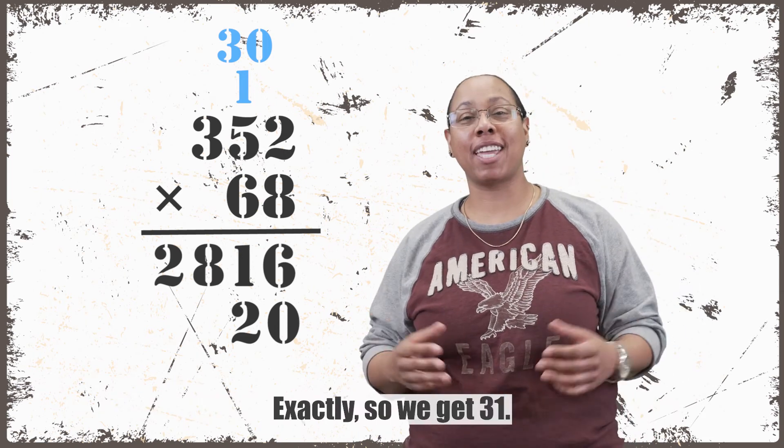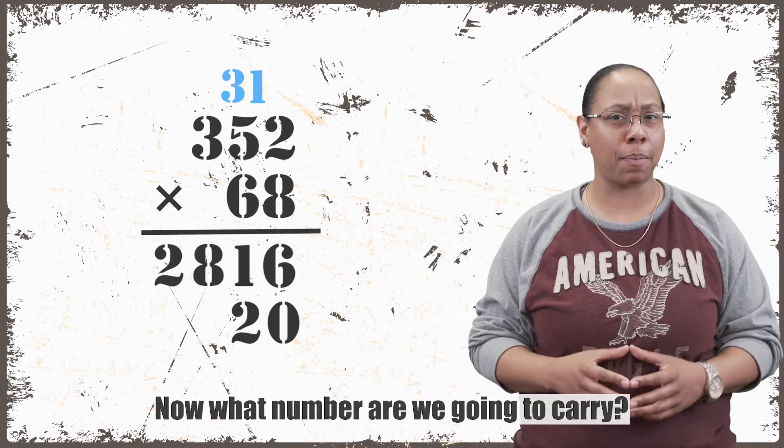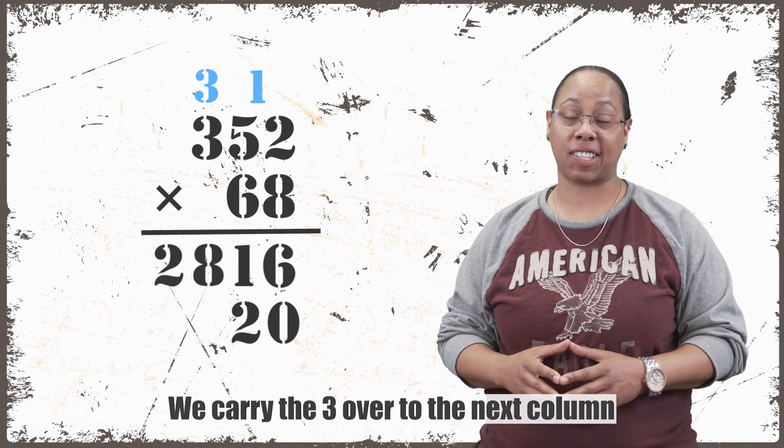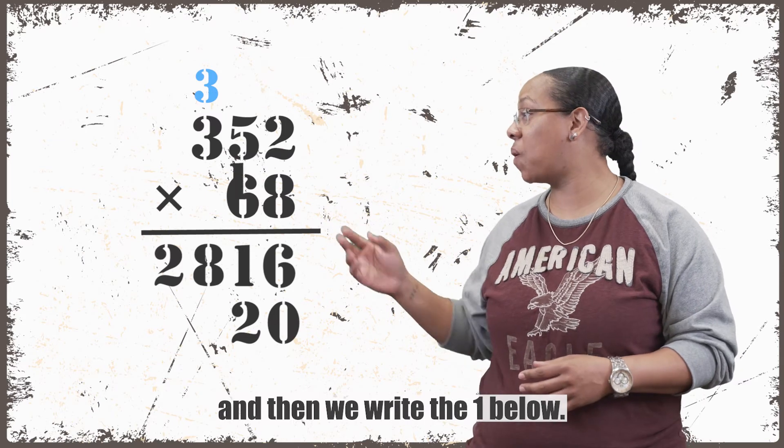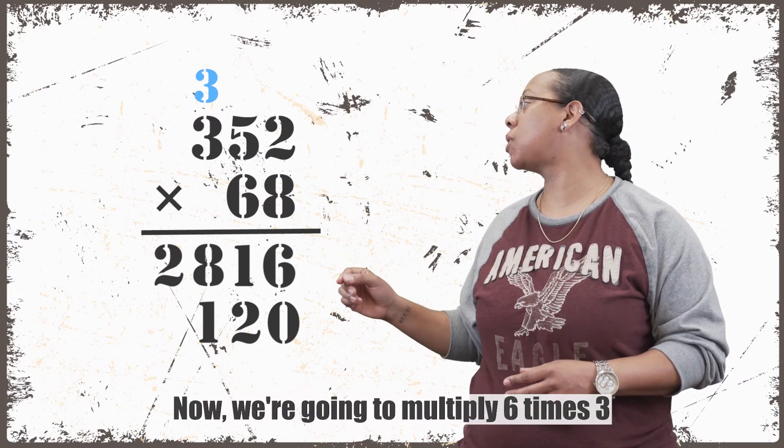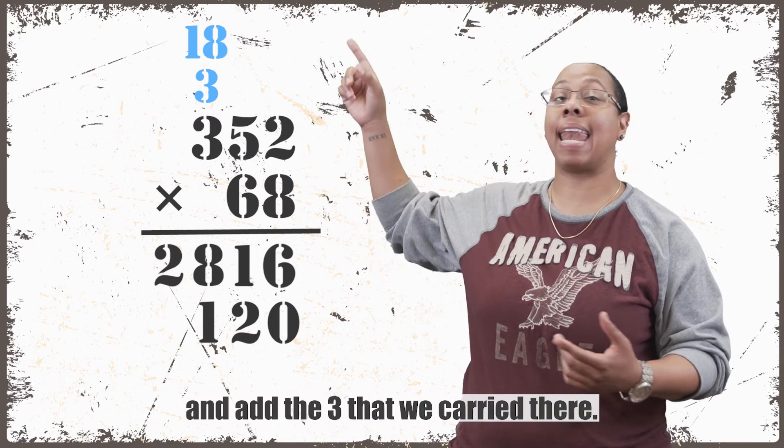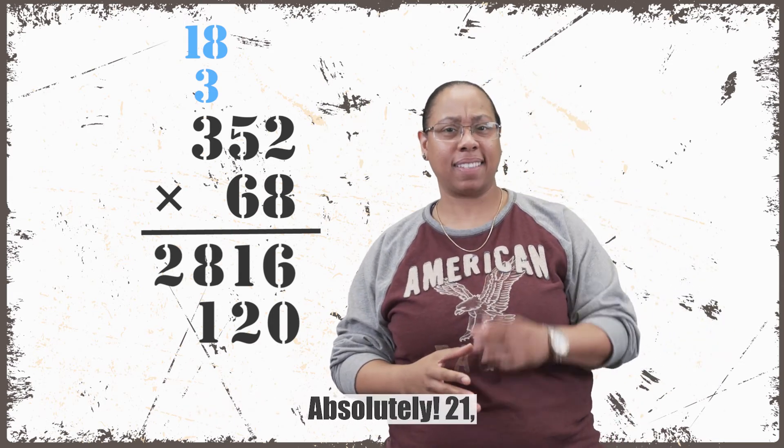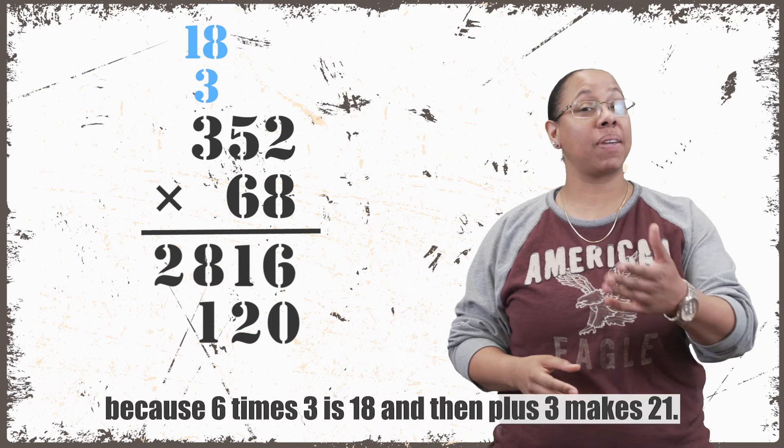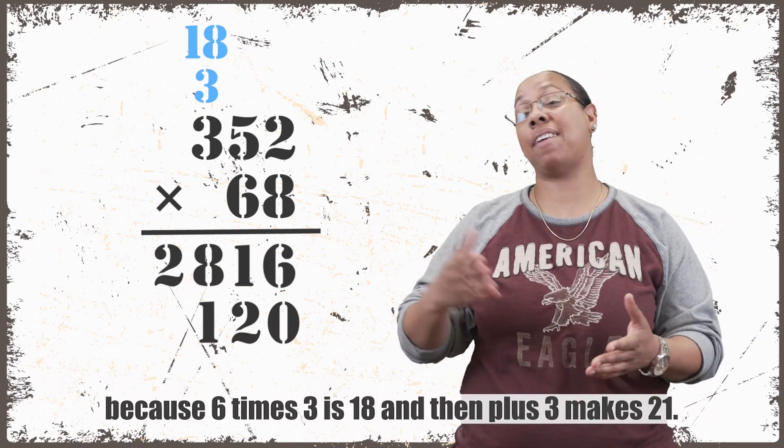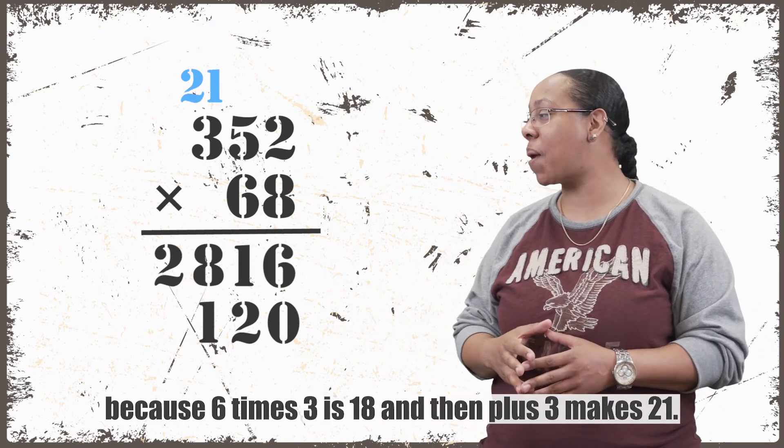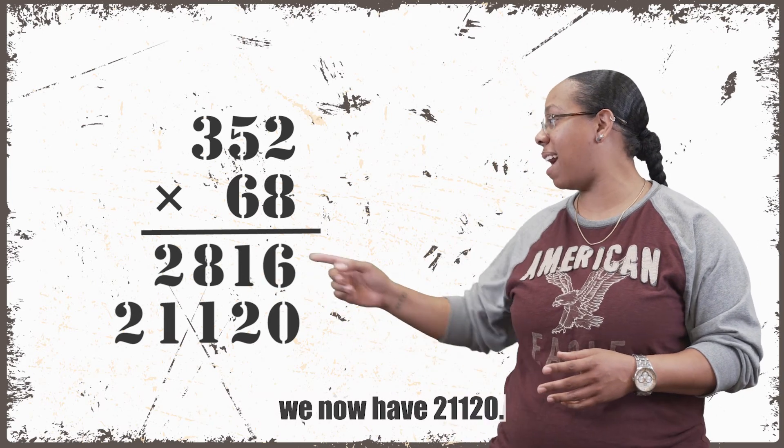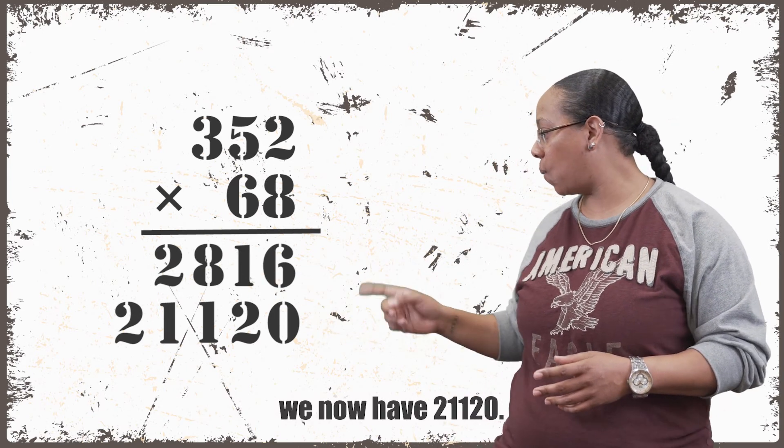Exactly. So we get 31. Now what number are we going to carry? You're right, the 3. We carry the 3 over to the next column and then write the 1 below. Now we're going to multiply 6 times 3 and add the 3 that we carry there. What's that going to give us? Absolutely, 21. Because 6 times 3 is 18 and then plus 3 makes 21. So now when we write that below, see what answer we have. We now have 21,120.